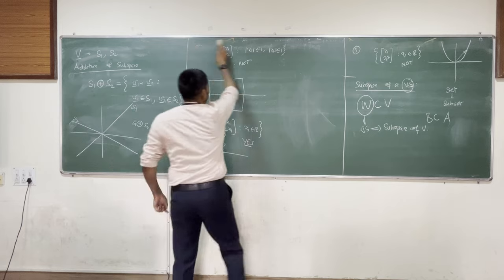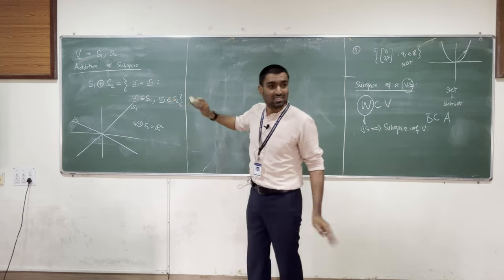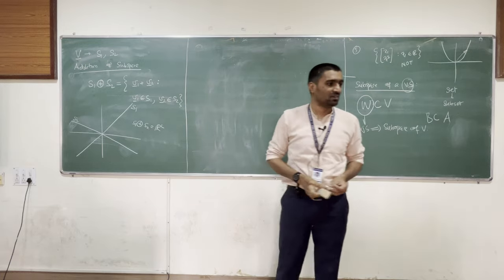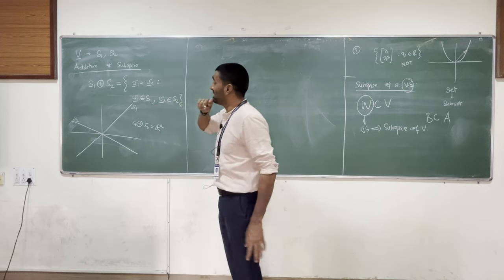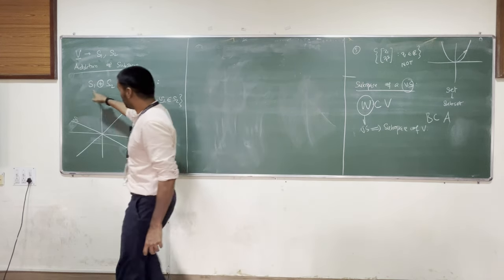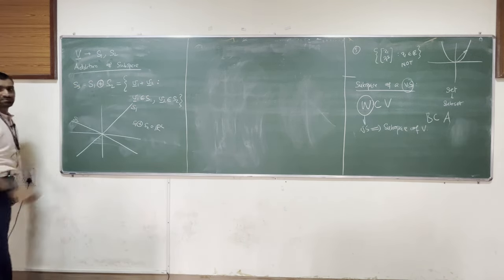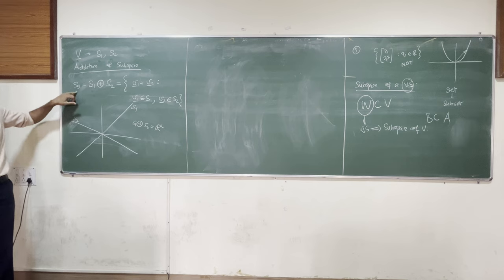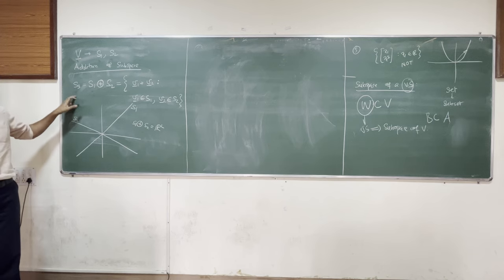This will be a useful thing to know later on. Before we continue: if I take two subspaces S1 and S2 and add them together to get S3, is this new set a vector space? You don't have to answer now, but write it down and see if you can show whether or not the sum of two subspaces forms a vector space.